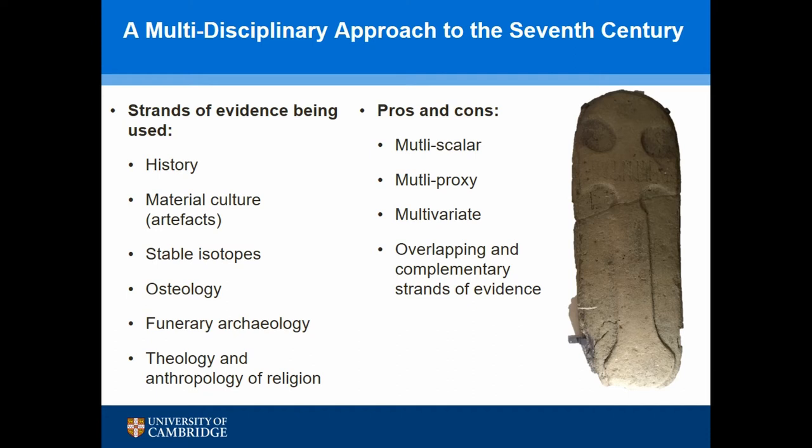This is multi-scalar — I'm doing everything from an individual approach up to a whole Anglo-Saxon framework. It's quite multivariate, which has pros in terms of overlapping and complementary evidence, but it's also causing me a bit of a nightmare in terms of stats and bringing it all together, so any suggestions would be great.